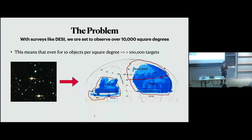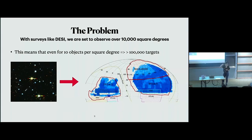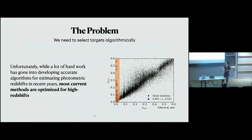That brings us to the second problem: we're now running surveys like DESI, covering tens of thousands of square degrees of sky. That means that even if we only have 10 objects per square degree, we're looking at over 100,000 targets. Target selection by eye is not effective anymore — we cannot cover the areas of sky we want to cover selecting targets manually. So we're going to have to select them algorithmically.